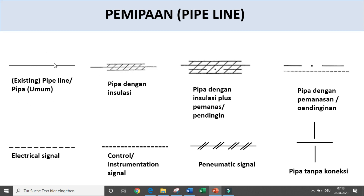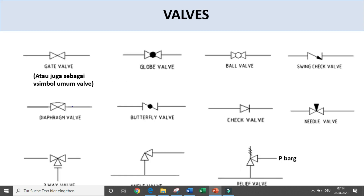Kemudian pemipaan — simbol pemipaan secara umum seperti ini. Pipeline yang existing — yang sudah ada — seperti ini. Dengan insulasi, dengan jacketnya seperti ini, dengan insulasi pemanas seperti ini, dengan pendinginan. Ada electrical signal seperti ini, artinya garis-garis putus-putus. Kemudian kontrol instrumentasi, apakah pneumatic signal. Karena terbatas tempat untuk menggambarkannya, maka tidak boleh saling memotong dalam menggambarkan pipa. Jadi ini pipa tanpa koneksi satu sama lainnya.